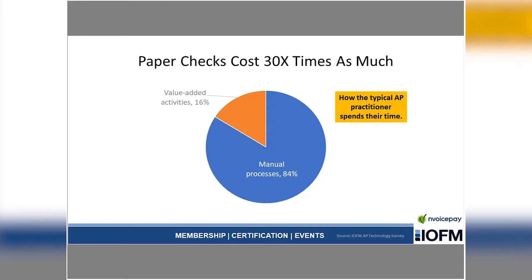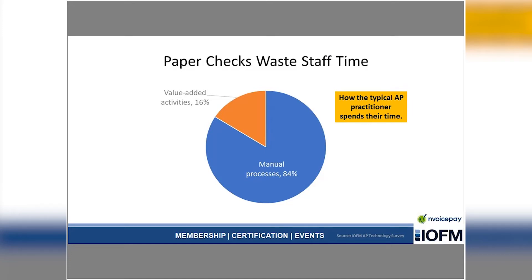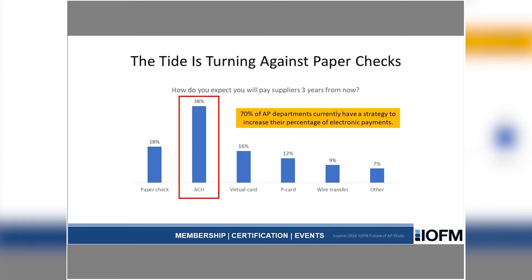Paper checks are responsible for 10 times as much fraud as their electronic alternatives, and even greater when you compare paper checks to virtual cards. Paper checks waste an enormous amount of staff time. 84% of the typical accounts payable practitioner's time is wrapped up in heads-down transaction processing — exactly the opposite of what senior management wants your team focused on. So if you're trying to free up staff to focus on value-added activities that drive strategic initiatives, getting off paper checks is a good way to do it. And the tide is turning against paper checks — at long last, businesses have said enough is enough.